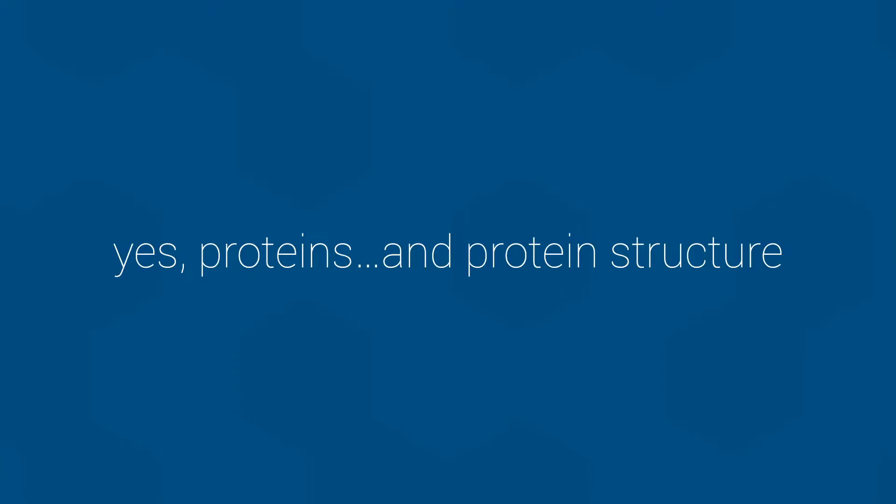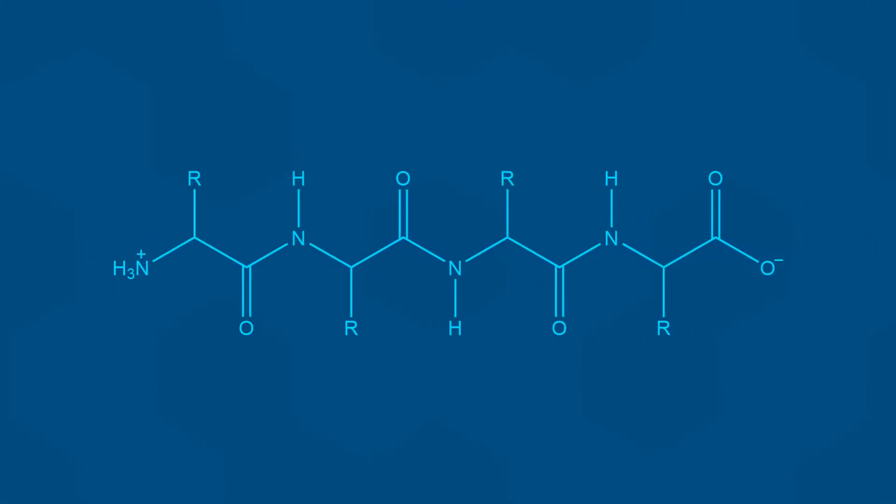As I discussed in the previous video, proteins are composed of amino acids that are linked together in a chain using peptide bonds. Looking at a small peptide chain, we can observe some key features.